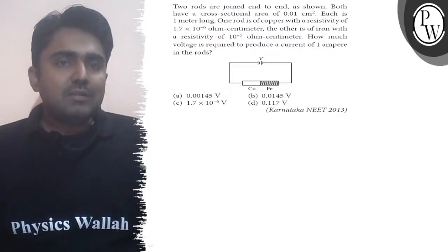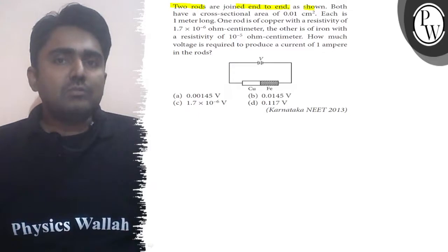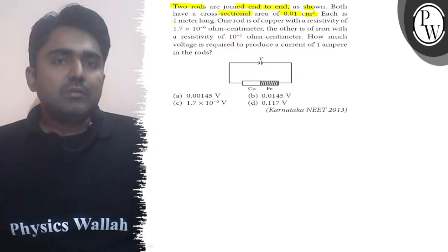Hello Bachchan. Let's read the question. It says that two rods are joined end to end as shown in the figure. Both have cross section area 0.01 cm² and each is 1 meter long.